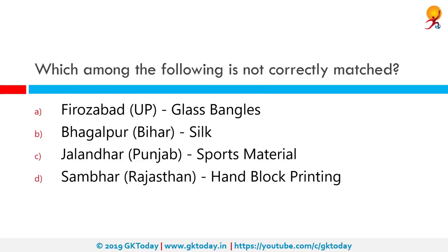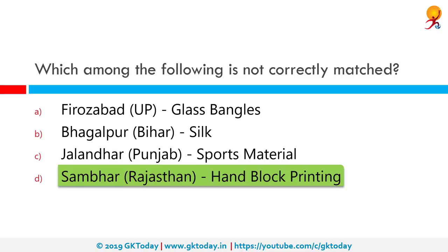Which among the following is not correctly matched? Sambhar to hand block printing is not correctly matched. Sambhar is near Ajmer in Rajasthan and Sambhar Lake is famous for salt production. Sanganer and Jaipur, also in Rajasthan, are famous for hand block printing.